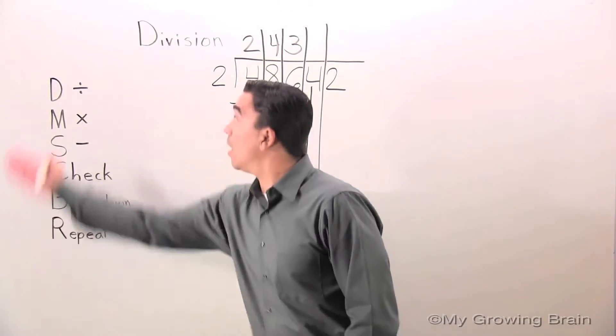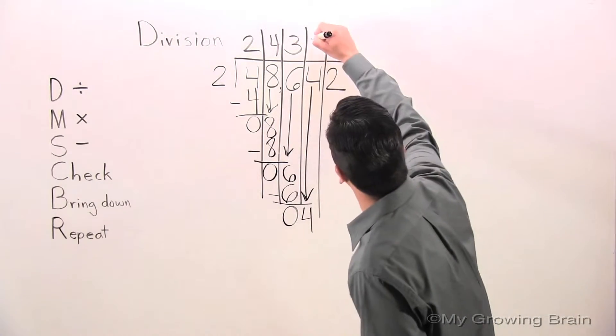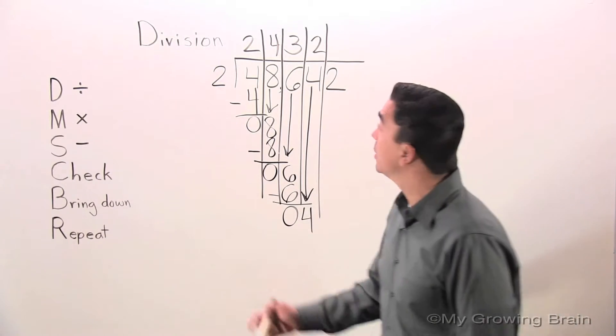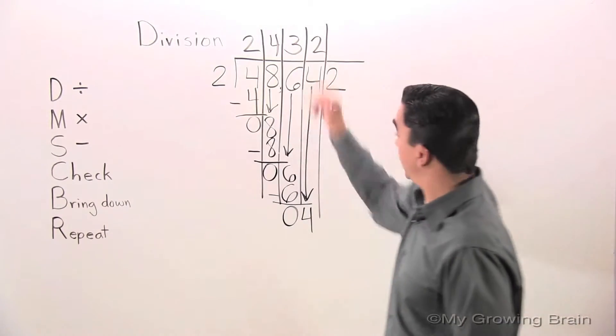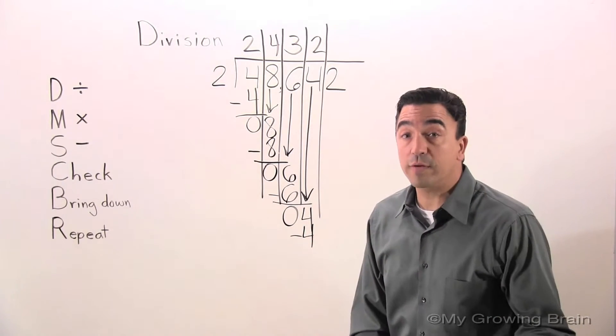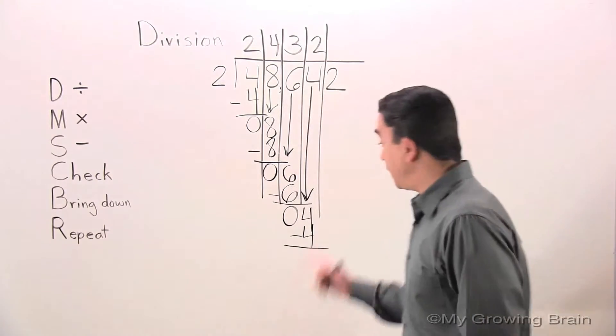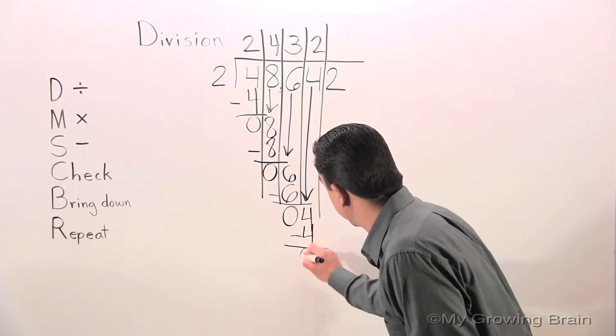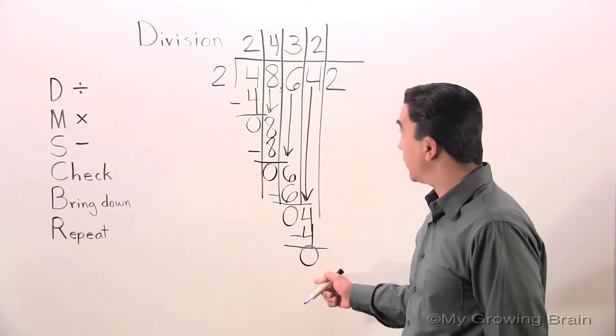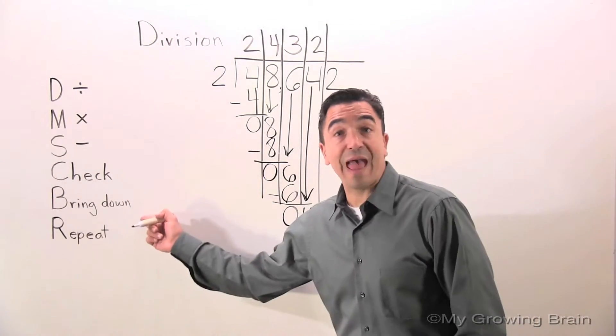Repeat. All the way back up to divide. 4 divided by 2 is 2. Next step: multiply. 2 times 2 is 4. We're going to subtract now, because subtract is the next step. And 4 minus 4 is 0. Check. 0 is less than 2. Move on. Bring down.